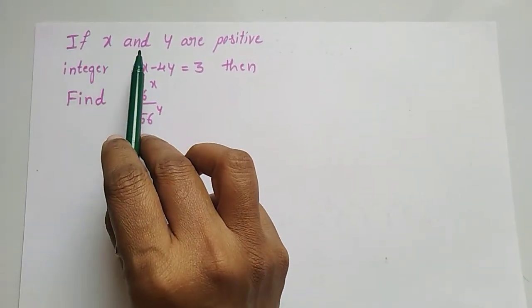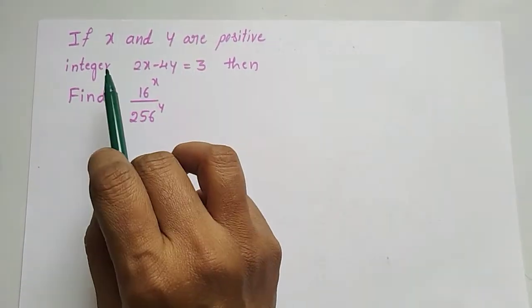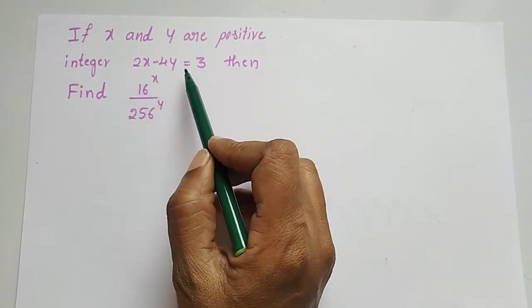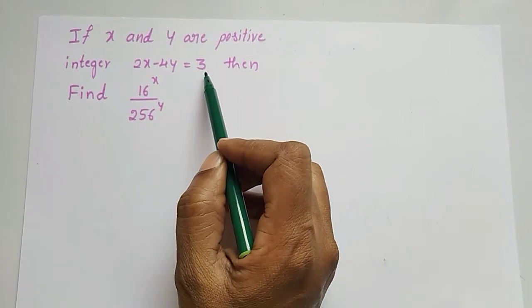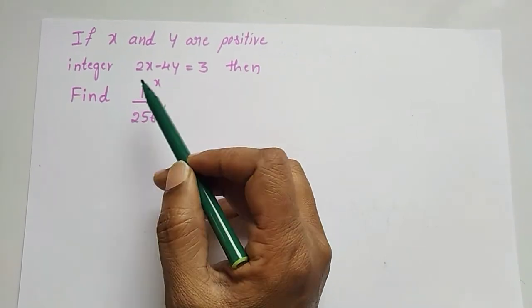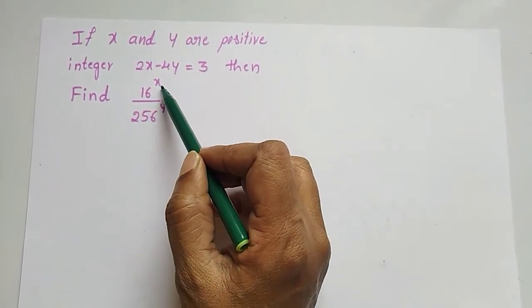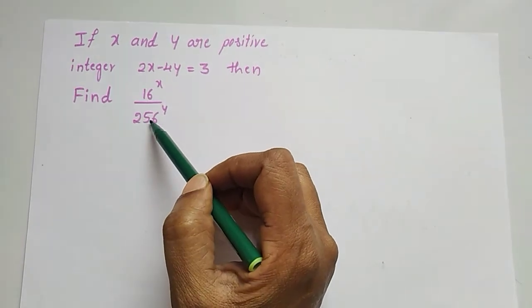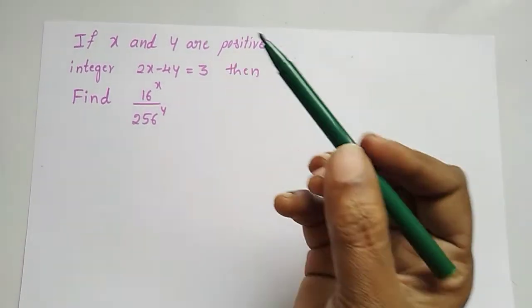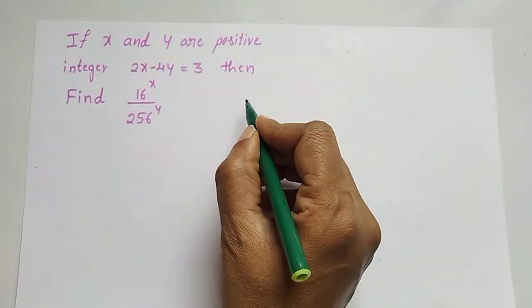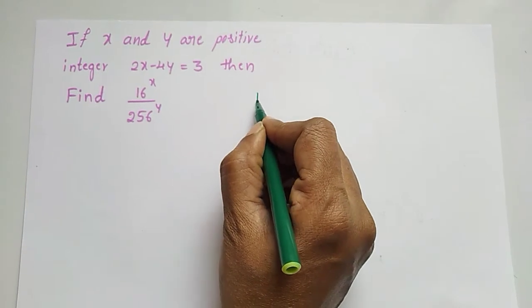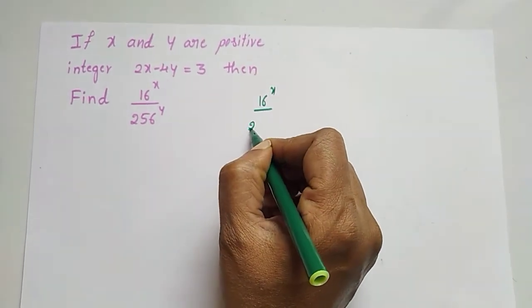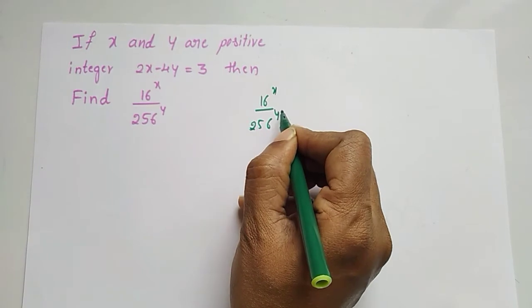If x and y are positive integers and 2x minus 4y is equal to 3, then find 16 to the power x divided by 256 to the power y.